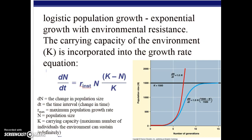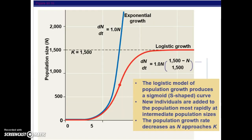This graph shows the logistic model of population growth again, pointing out the S-shaped curve versus the J-shaped curve.